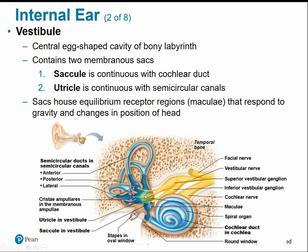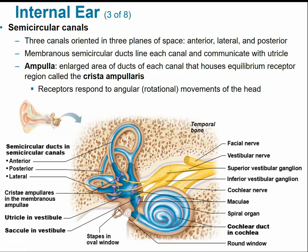The utricle and saccule contain equilibrium receptors called maculae that respond to gravity and changes in position of the head. The semicircular canals are three canals oriented in three different planes of space — anterior, lateral, and posterior. The ampullae are widened enlarged ends of the semicircular canals that house the crista ampullaris equilibrium receptors, which respond to angular or rotational movements of the head.